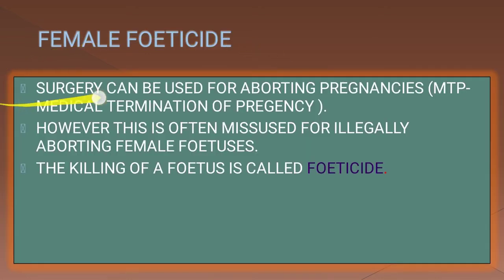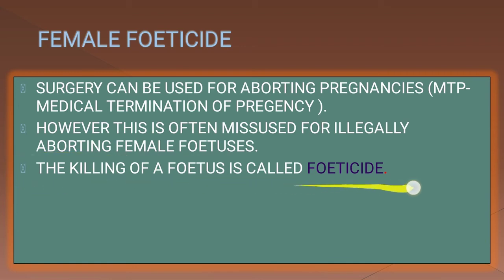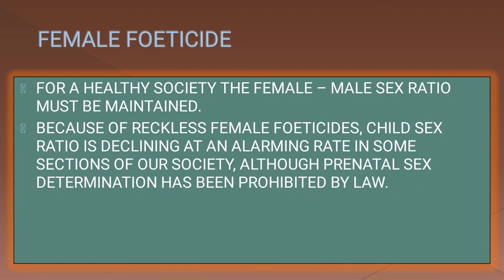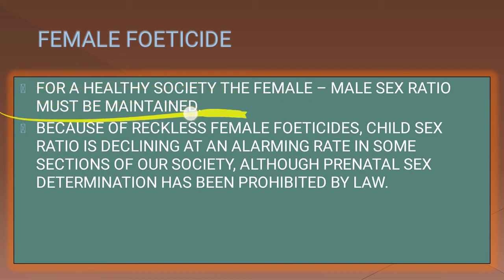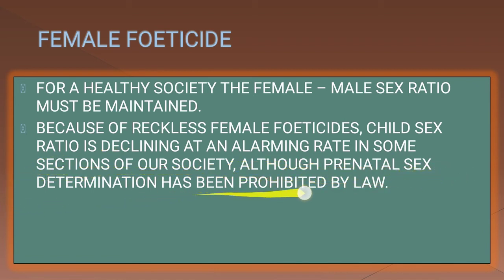Surgery can also be used for aborting pregnancies — that is MTP, medical termination of pregnancy. However, this is often misused for illegally aborting female foetuses. Killing of a foetus is called foeticide. For a healthy society, the female-to-male sex ratio must be maintained. Because of reckless female foeticides, the child sex ratio is declining at an alarming rate in some sections of our society. Although prenatal sex determination has been prohibited by law.